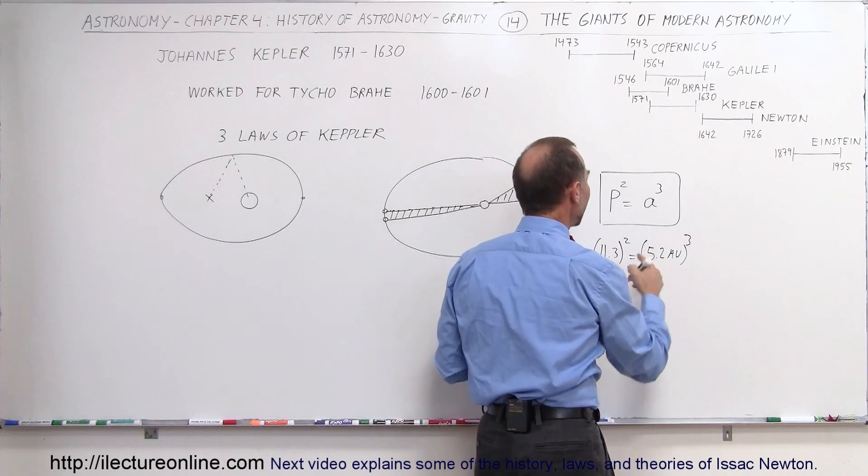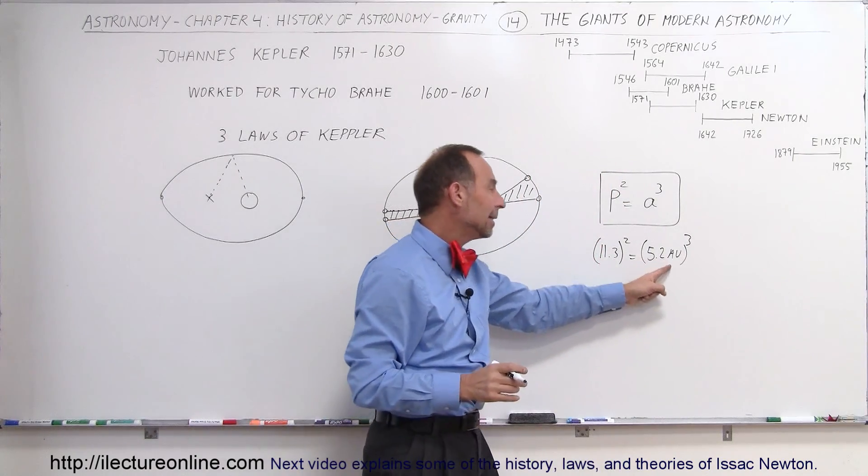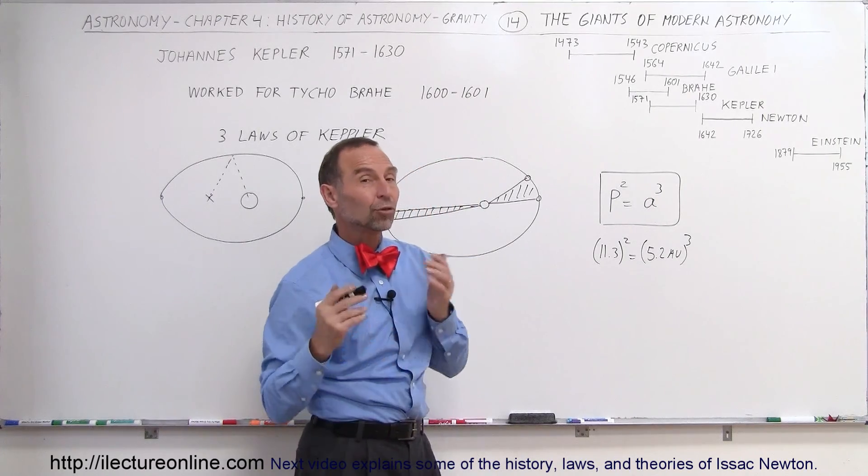Cubed. So we found that there was always that relationship between the period and the orbital distance from the Sun to the planet. And that is then Kepler's third law.